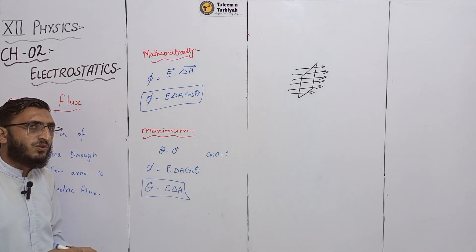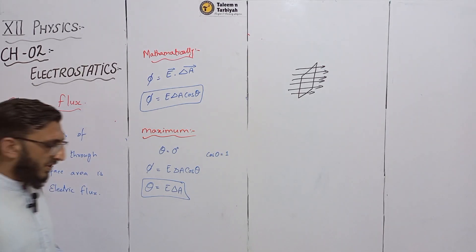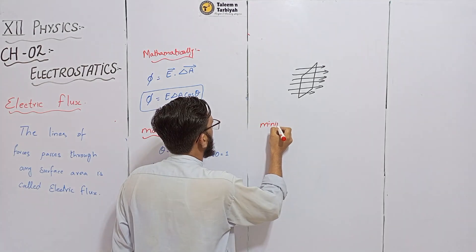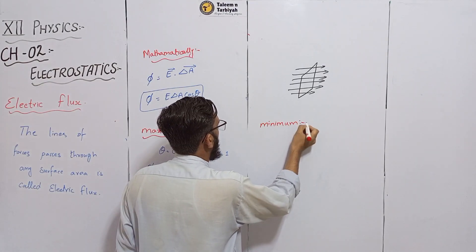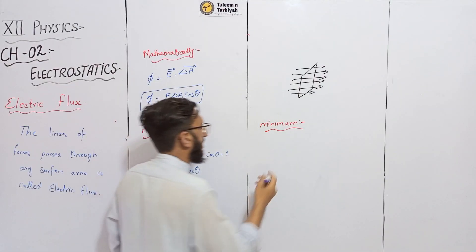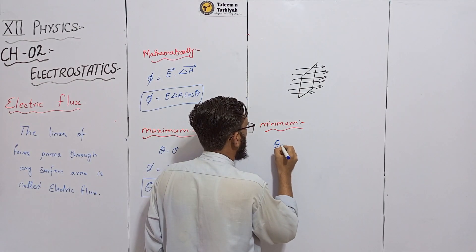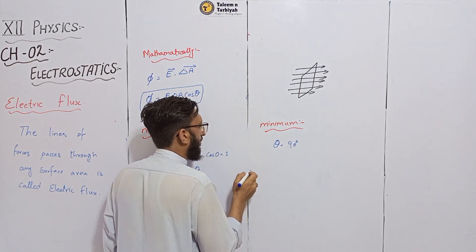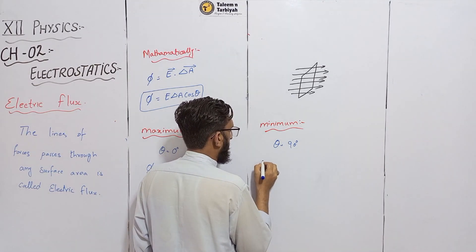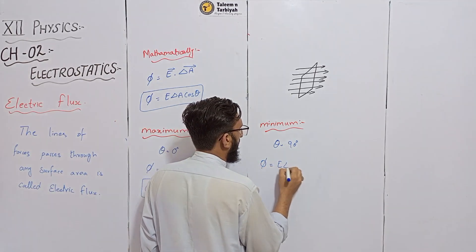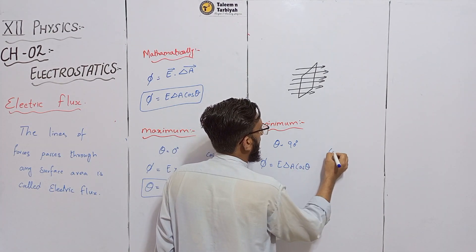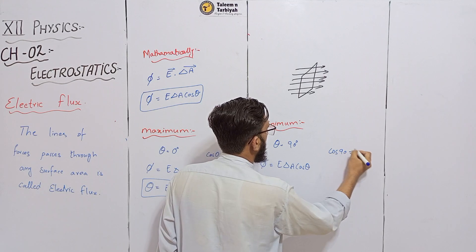If electric flux is minimum, then electric flux is equal to E delta A cos theta, where cos theta is equal to zero. So if cos theta equals zero, then electric flux equals zero, which is the minimum condition.